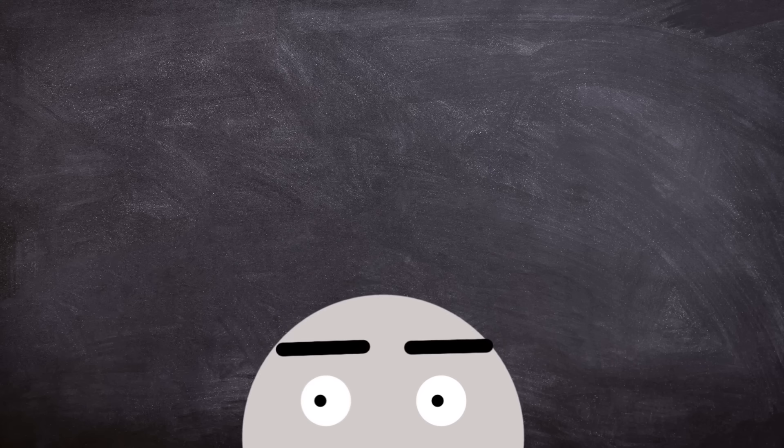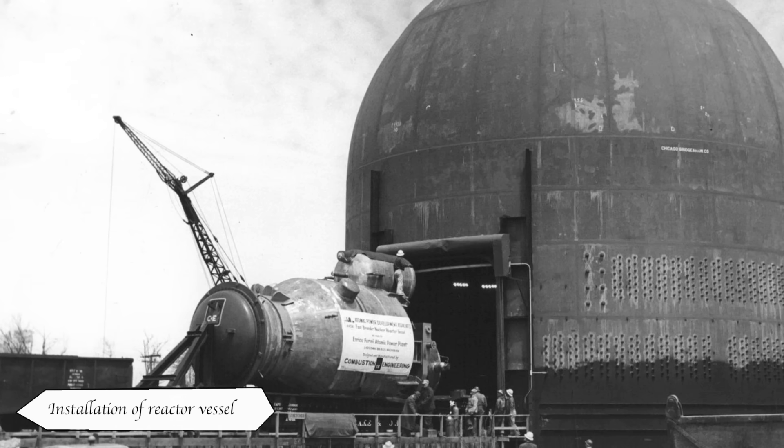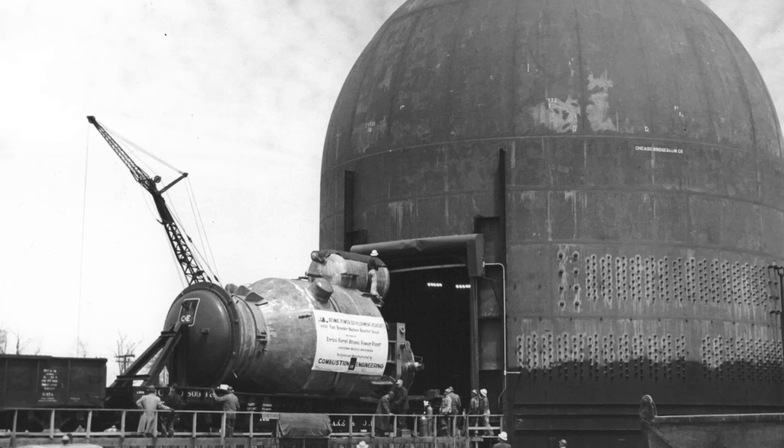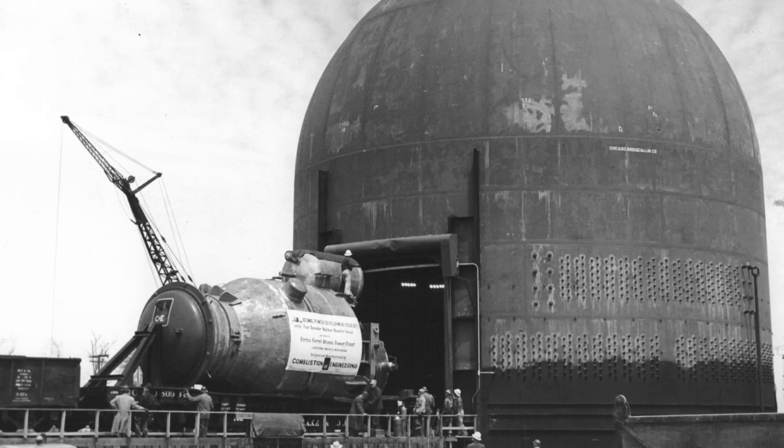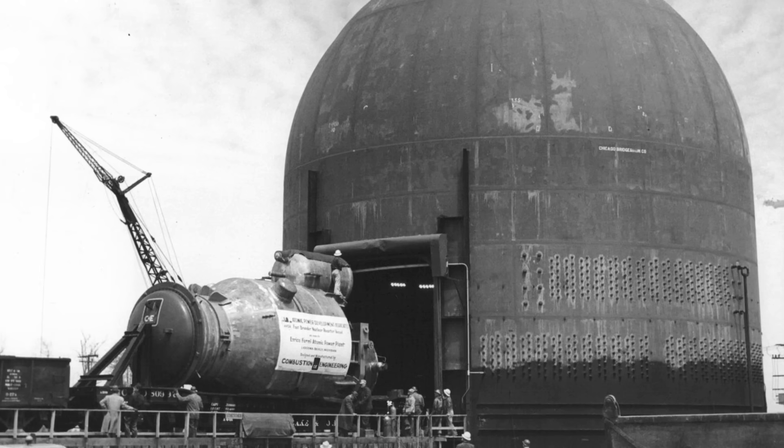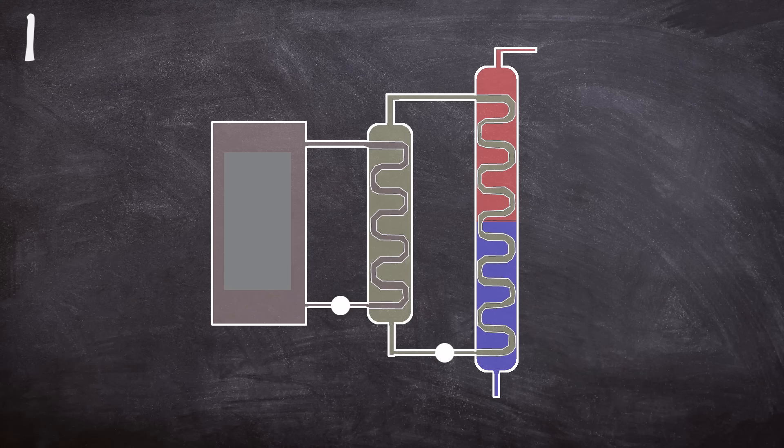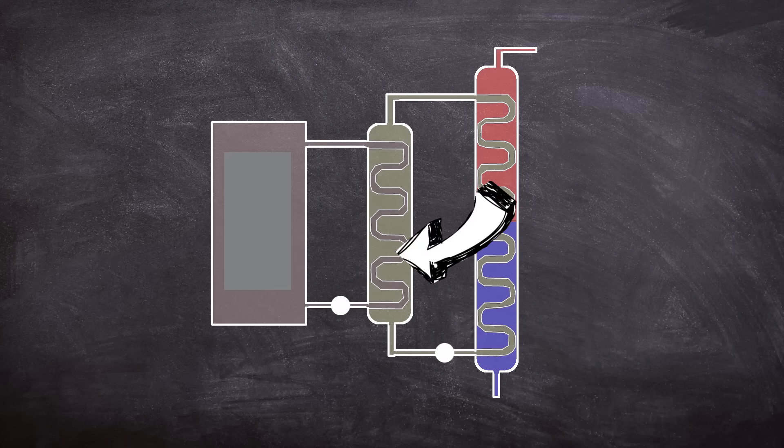The Fermi-1 reactor received its sodium coolant in 1960 and achieved criticality in 1963. The reactor was tested at low power in its first couple of years of operation. Power testing above one megawatt commenced in December 1965, immediately after the receipt of its high power operating license. The reactor had two cooling loops, both using liquid sodium.